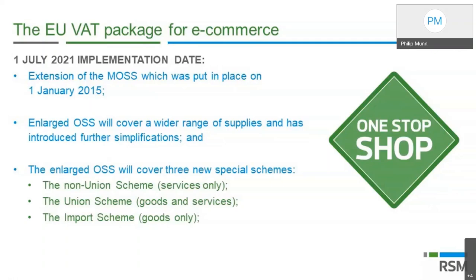I won't have time to cover the changes for online marketplaces in any detail today, but suffice to say that any business facilitating the sale of goods via the internet — Amazon's marketplace being the most commonly cited example — will be treated as though they have bought the goods from the supplier and sold them to the consumer. As far as VAT is concerned, it is Amazon in Amazon's case that will be selling goods to the end consumer in the EU. If your organization facilitates such sales, we would recommend considering these changes in more detail.